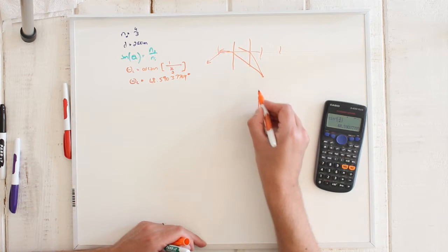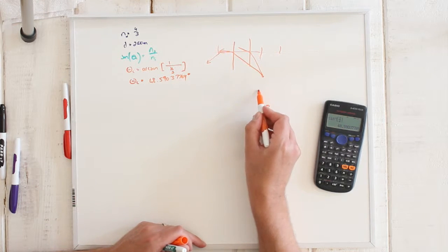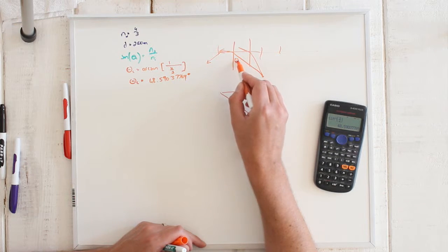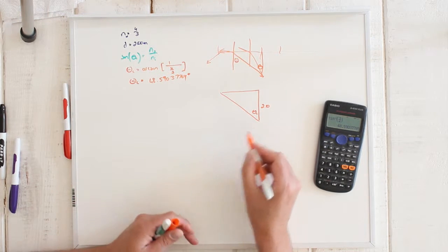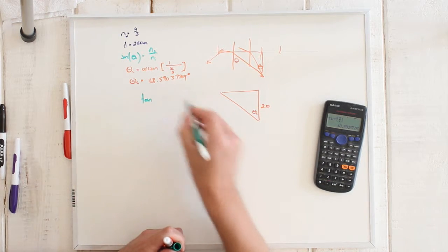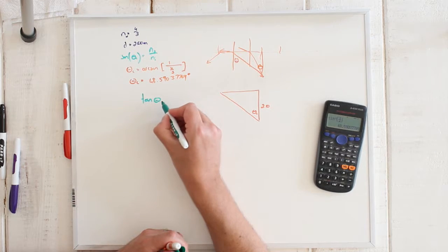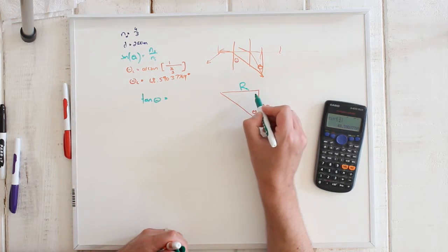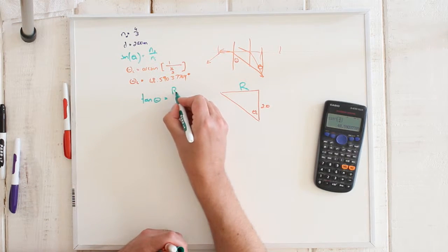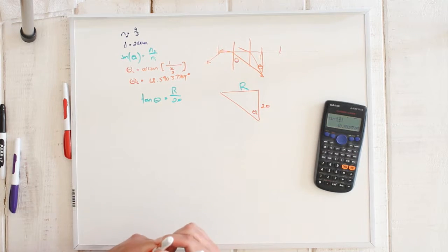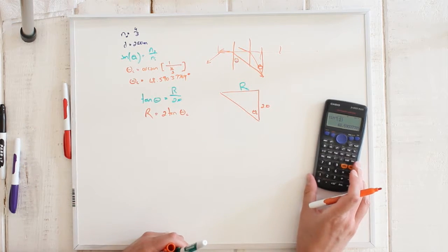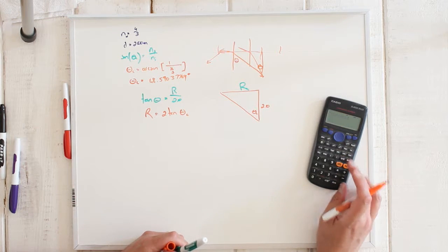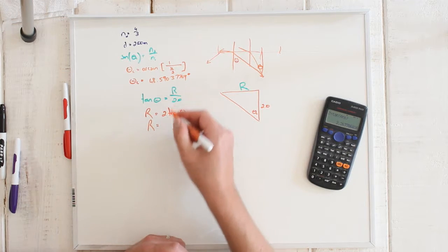Now, the depth is 2.0 meters and the critical angle theta_c is known. Through Euclidean geometry, the tangent in this triangle equals the radius divided by 2.0. In other words, the radius equals 2 times the tangent of the critical angle. Calculating 2 times tangent(48.659°) gives a radius of 2.27 meters to three significant digits.